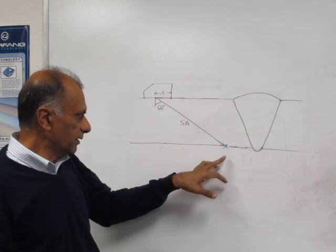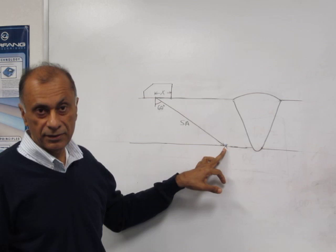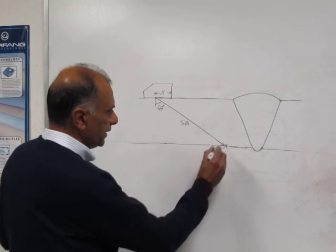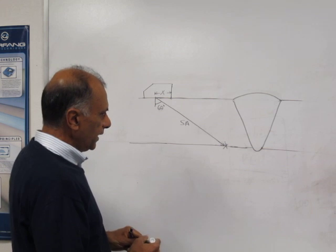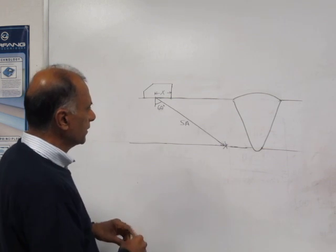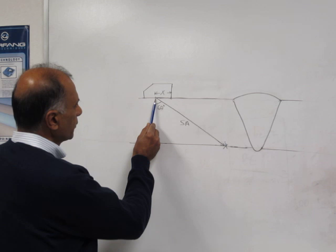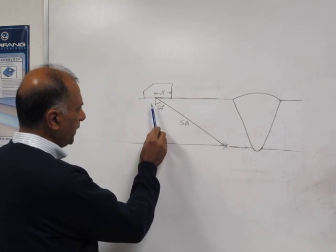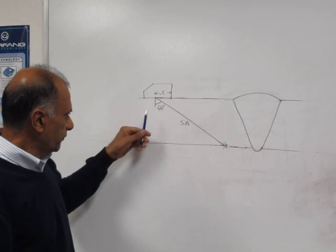Let's say hypothetically there is a crack here. If there is a crack, a signal will be reflected to the transducer. The transducer will measure the sound path from the exit point of the probe, from here to there, and knowing the refracted angle...